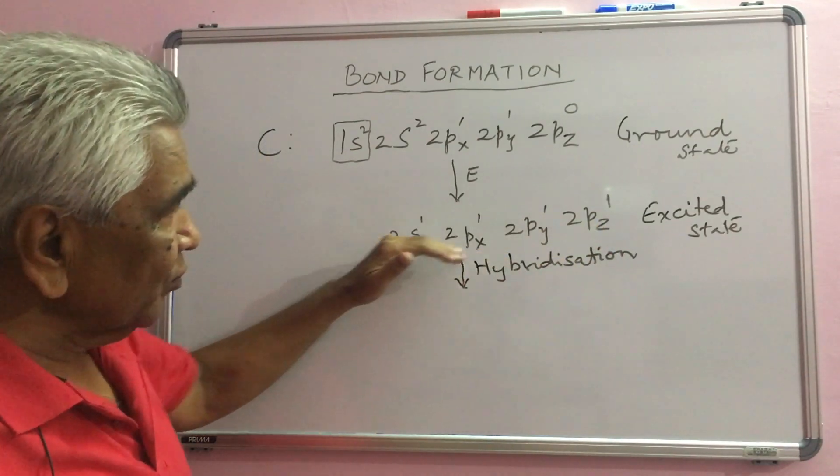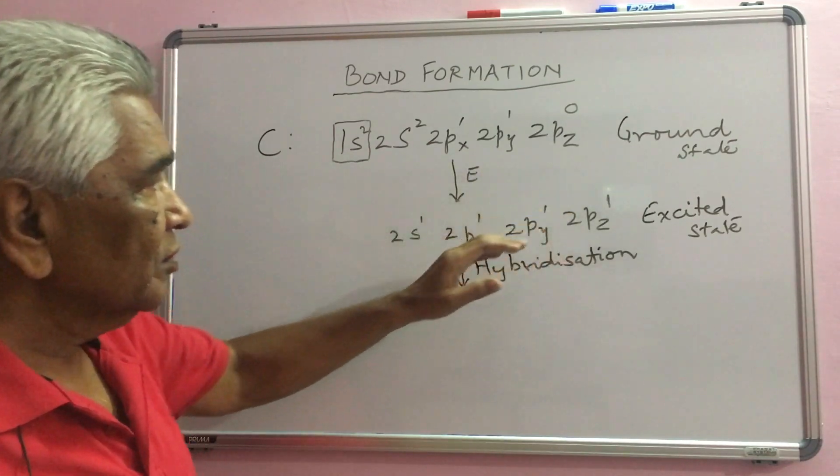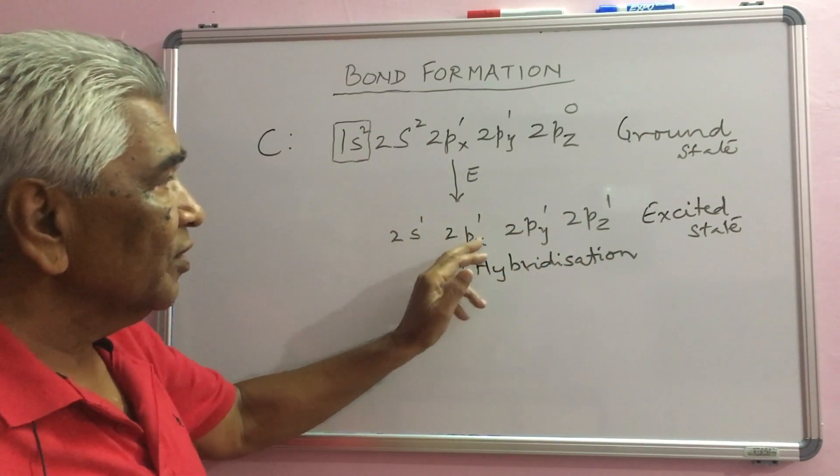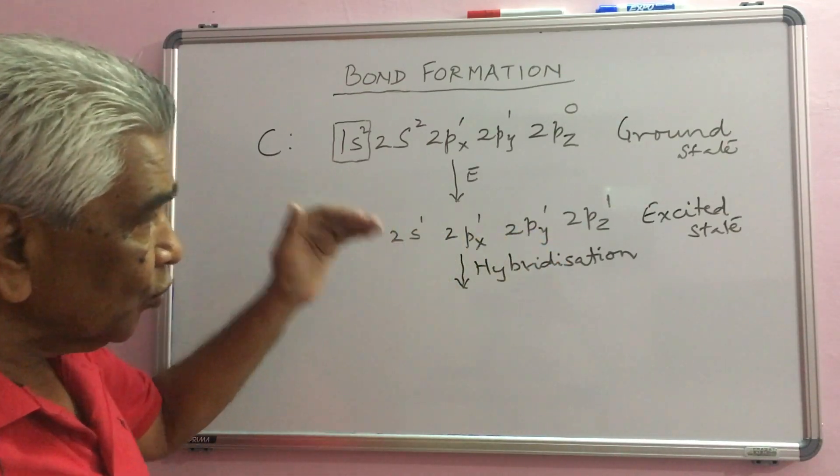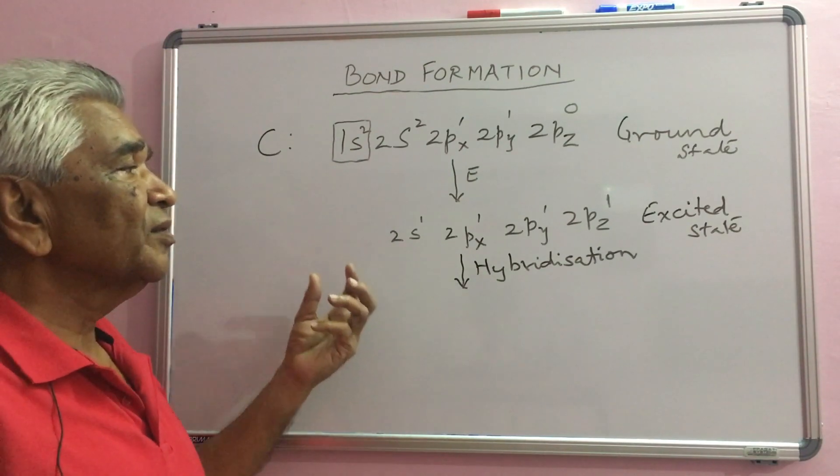If all the 4 blend together, they will form 4 new orbitals. They will lose the identity S and P. Those 4 will have similar shape and similar type of energy.